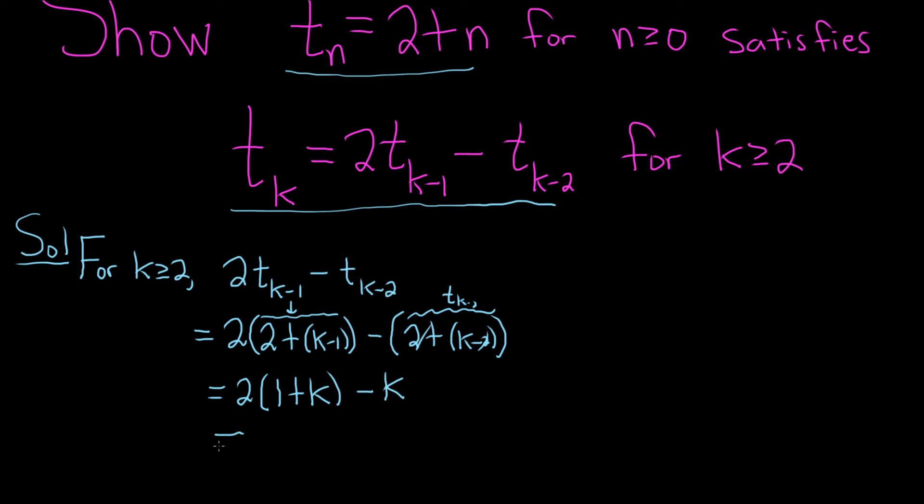We can distribute the 2. So we get 2 plus 2k minus k. And that's equal to 2 plus k, because 2k minus k is k.